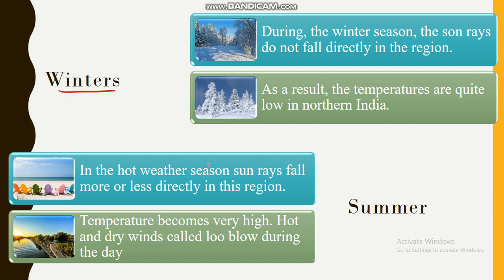Now let's study these seasons in detail. First, winter. During the winter season, the sun rays do not fall directly in the region, which means it is cold. People say the sun feels cold in winter because its rays have to pass through many obstacles before reaching us. As a result, temperatures are quite low in northern India.